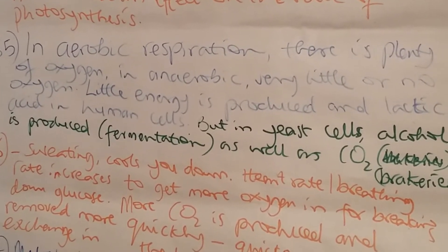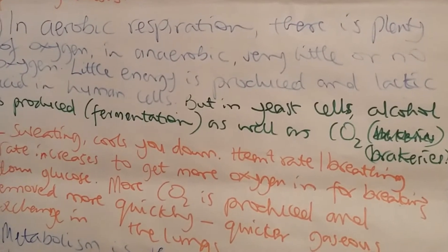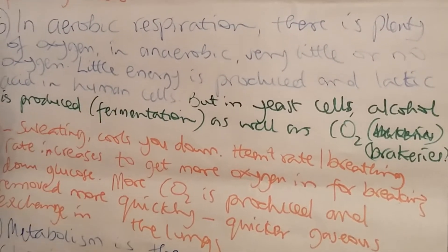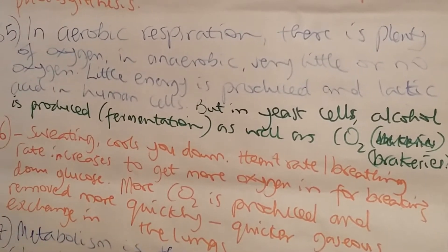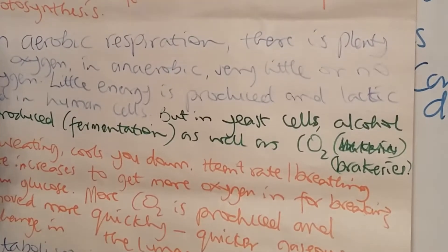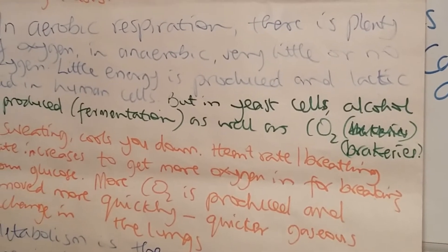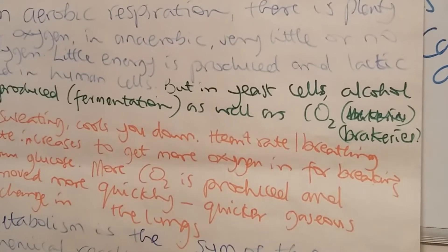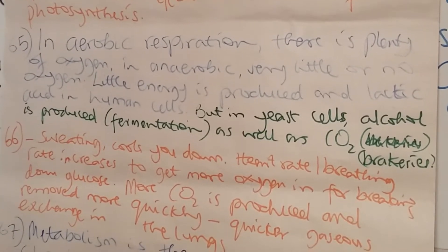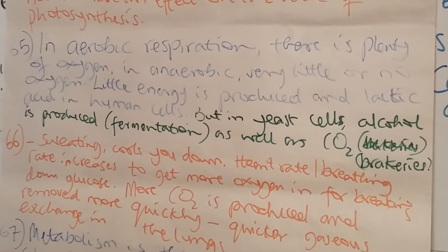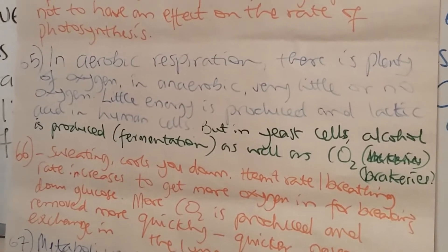Anaerobic respiration in yeast cells is slightly different because it involves the production of alcohol in a process called fermentation. The actual alcohol is ethanol, and that's why it is used in breweries for making beers, wines, and spirits. CO2 is also produced, which is why it is used in baking to make dough rise.